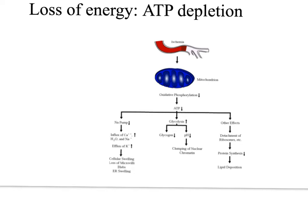First let's talk about loss of energy due to ATP depletion. This is particularly important in tissues with low glycolytic activity, where ATP production is dependent on oxidative phosphorylation of ADP and the electron transport chain of the mitochondria. So here we have ischemia occurring, causing changes in the respirations of the mitochondria, affecting its ATP production, depleting the ATP stores, resulting in glycolysis, which is a very inefficient form of energy.